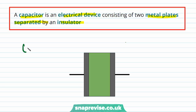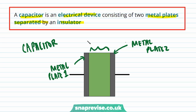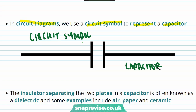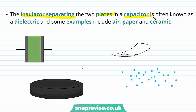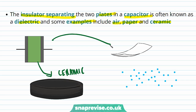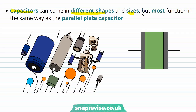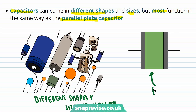Here's a diagram of a capacitor with two metal plates separated by an insulator. In circuit diagrams we use a circuit symbol to represent a capacitor. The insulator separating the two plates is often known as a dielectric, and some examples include air, paper, and ceramic. Capacitors can come in different shapes and sizes, but most function in the same way as the parallel plate capacitor.